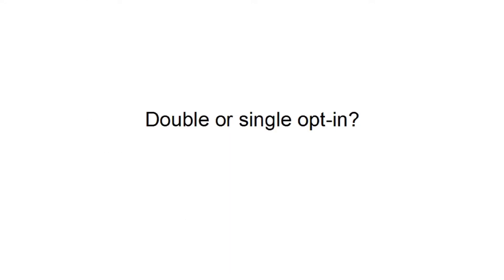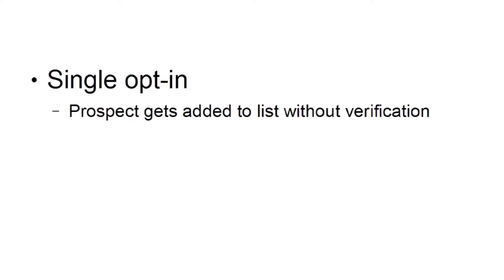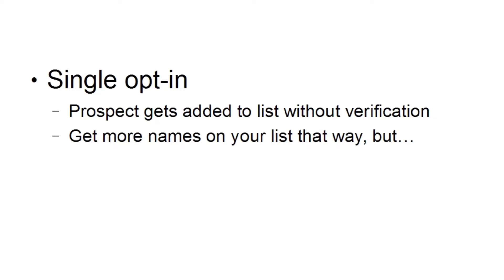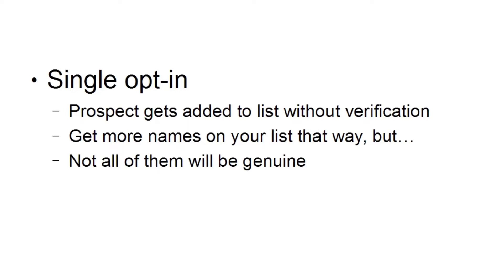One thing you'll need to decide at the beginning is whether you want double or single opt-in. With single opt-in, the prospect gets added to your list without any verification. You'll get more names on your list that way, but not all of them will be genuine. Some people will put in a fictitious name and email address just to get your freebie, and you don't know whether it's a genuine email.